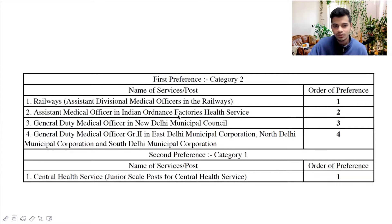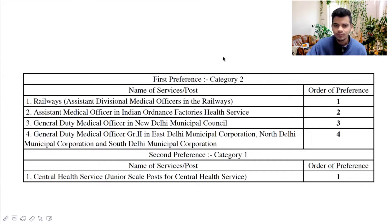So among these four, whichever one you want first, you will have to put as number one, then number two, number three, number four. But if you want Central Health Services as your first preference, then this will come above. So the first preference will be category one and in category one Central Health Services, order of preference one, then second preference will be category two. And then in these things, you can change your orders.